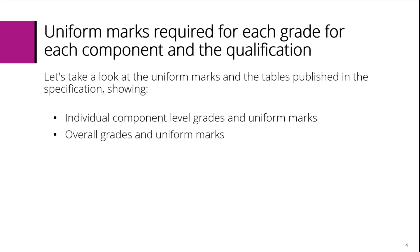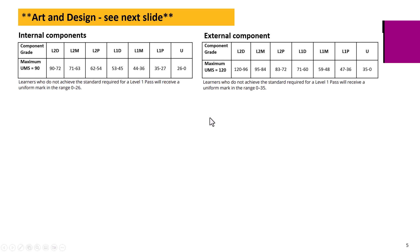Let's see the UMS and grade tables published in the specification. For each component grade, there are a range of uniform marks. For example, a Level 2 pass in the internal components would give learners 54 to 62 uniform marks, depending on the raw marks they have achieved.